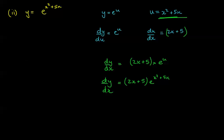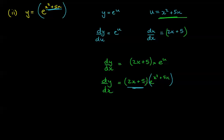Notice what's happened: you still have a copy of e to the power of x squared plus 5x. But what goes in front of it is the derivative of the power, which is 2x plus 5. So it's the derivative of the power times e to the power of whatever you had at the start.